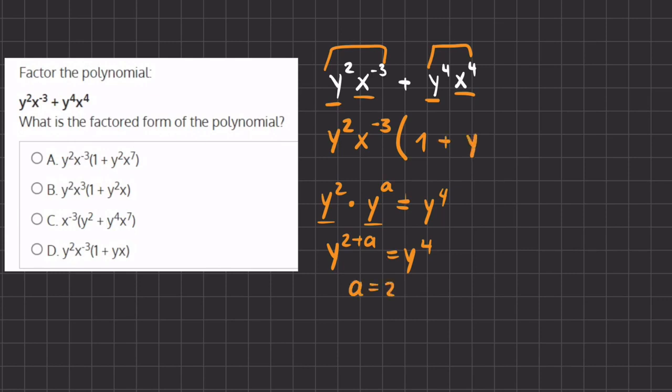So we are adding here y to the power of 2, and we have to find what our x is over here. So now we'll do the same for our x's. We have x to the negative 3 times x to the power of a, that we don't know, equals x to the power of 4.